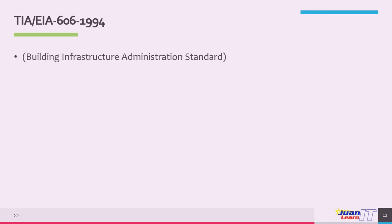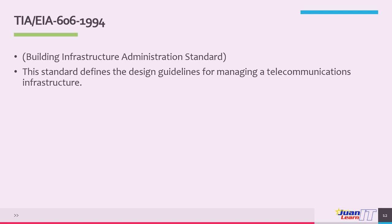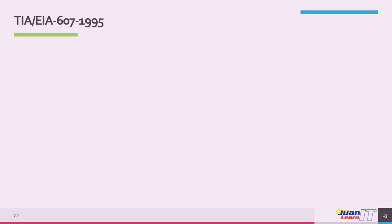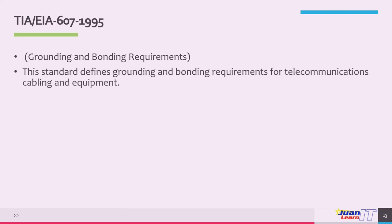The TIA EIA 606 series of 1994, the building infrastructure administration standard, defines design guidelines for managing a telecommunication infrastructure. The TIA EIA 607 series of 1995 defines grounding and bonding requirements for telecommunications cabling and equipment. The current trend is to evolve standards to support high-speed networking such as Gigabit Ethernet, with advanced cable types like four-pair Category 6 — rated up to 200 MHz — and Category 7 — rated up to 600 MHz.